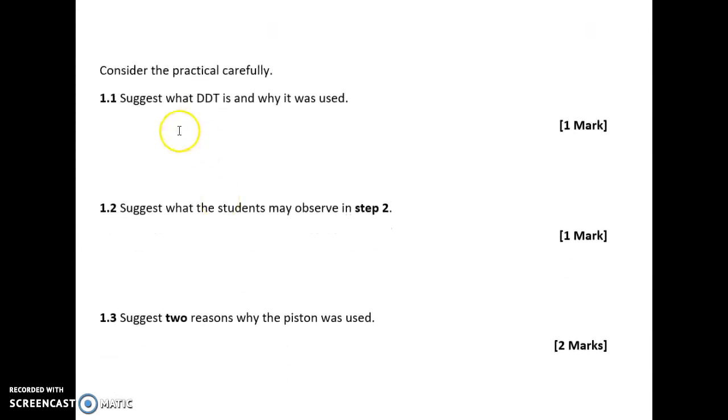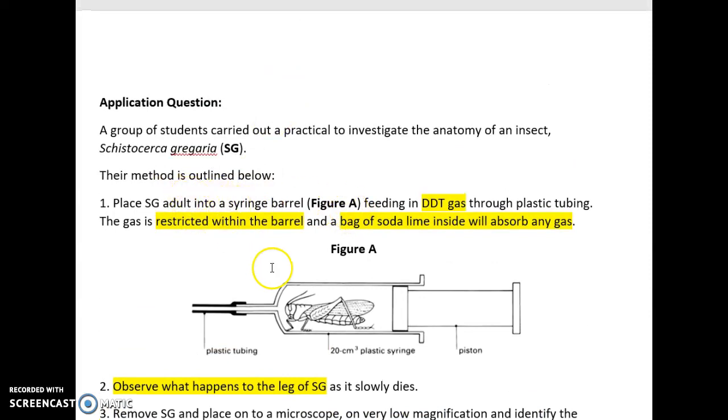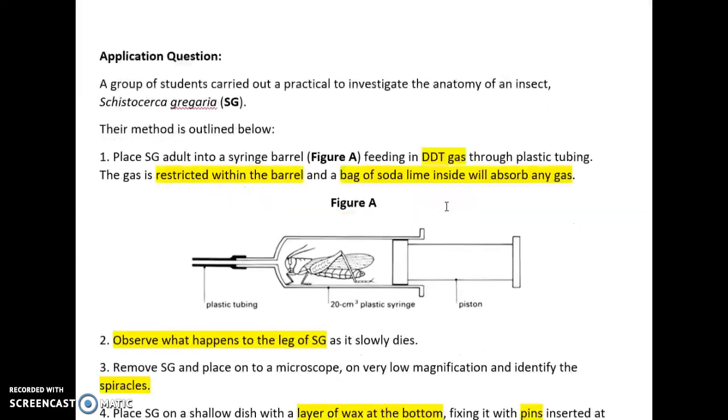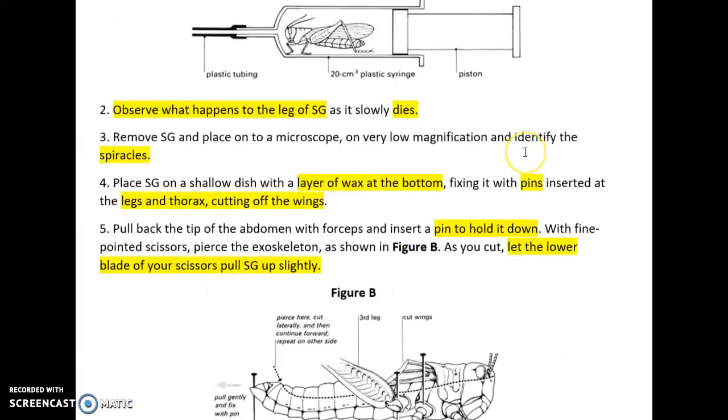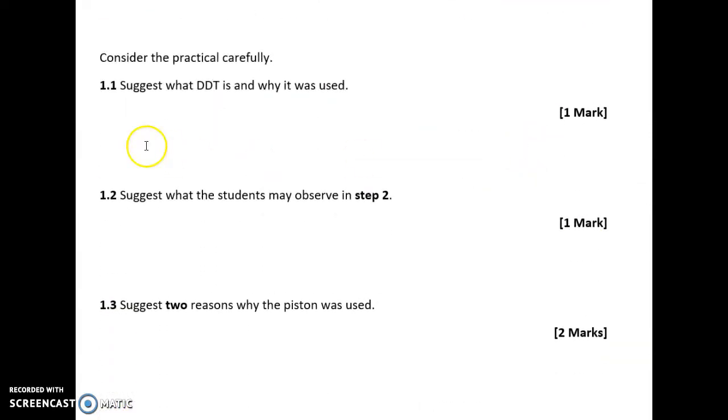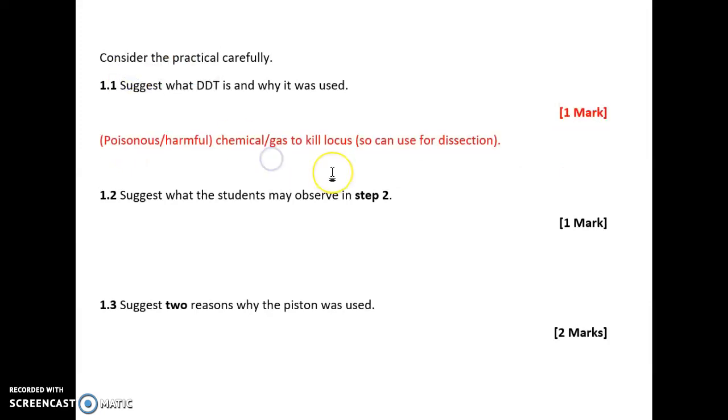First question: Suggest what DDT is and why it was used. If we go back to the reference, it says the students fed in DDT gas. Observe what happens to the leg as it slowly dies. If it's dying, it must be due to DDT. Therefore, DDT must be some sort of poisonous chemical gas to kill the insect, to kill the locus so that we can use it. Chemical gas to kill locus.